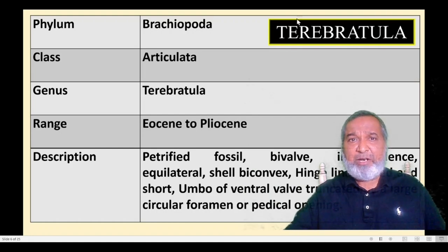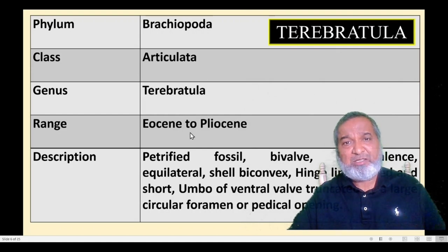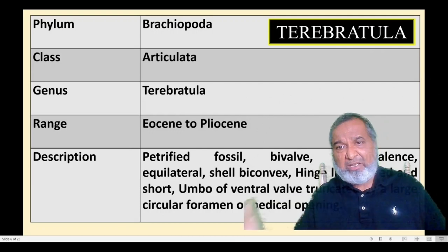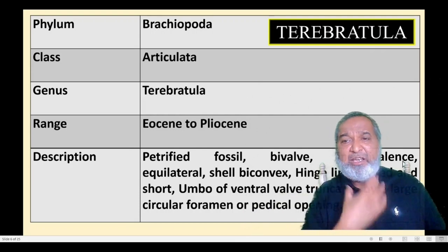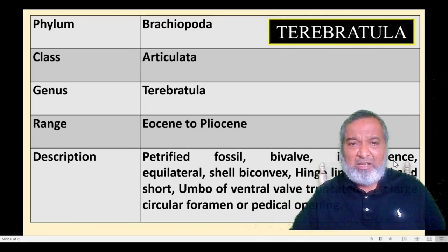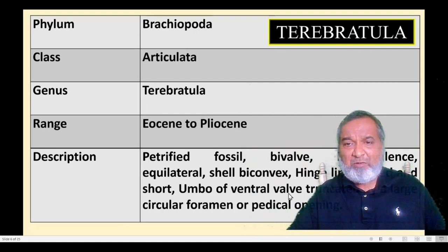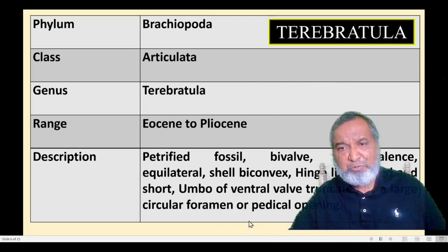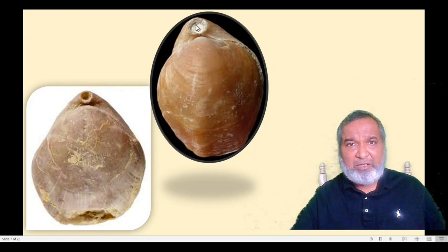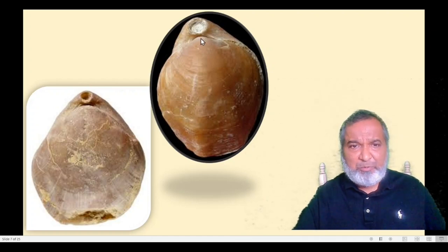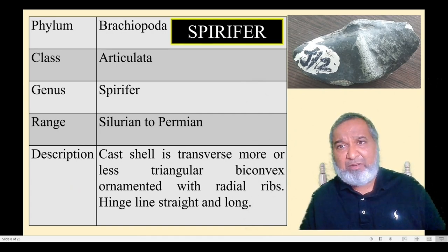Terebratula: Phylum Brachiopoda, class Articulata, genus Terebratula, range Eocene to Miocene. This is a petrified fossil. It is inequivalved and equilateral. Shells are biconvex, hinge line curved. The umbo on the ventral wall is truncated by a large circular foramen — the pedicle opening. Parts visible include the brachial valve, pedicle valve, hinge line curvature, umbo, and growth lines. Dorsal side and anterior side are labelled.